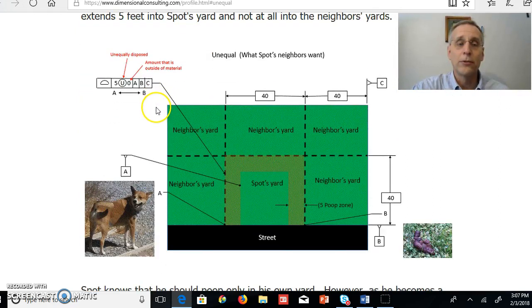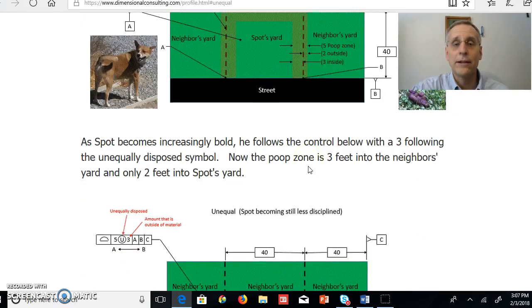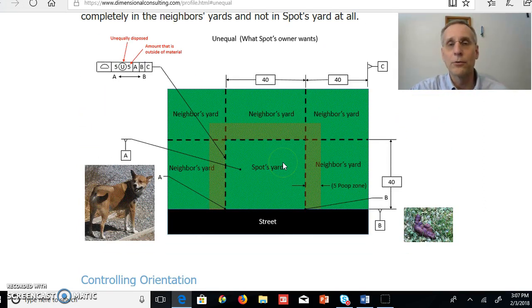But if you have it unequally disposed, then it's going to be part inside, part outside. Whatever is following the unequally disposed symbol is the amount that's going to be outside. And Spot's owner can only hope that it'll be like this until his neighbors find out.